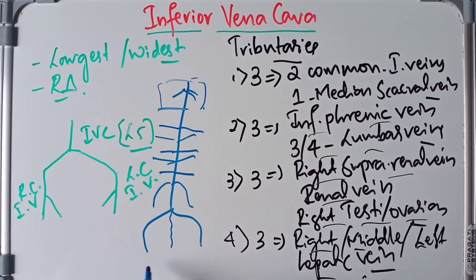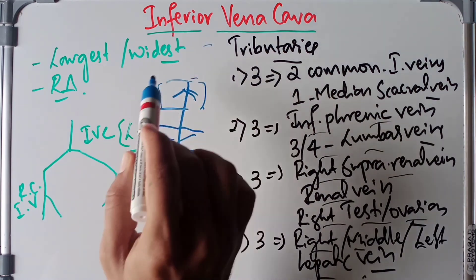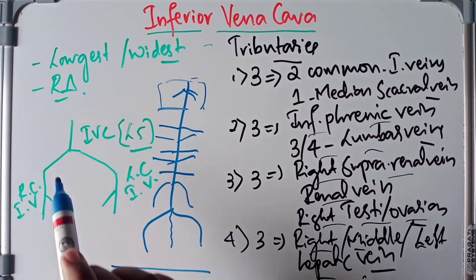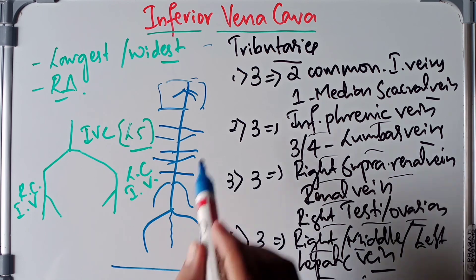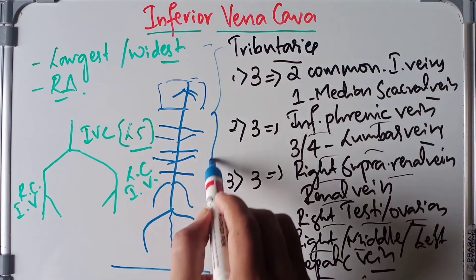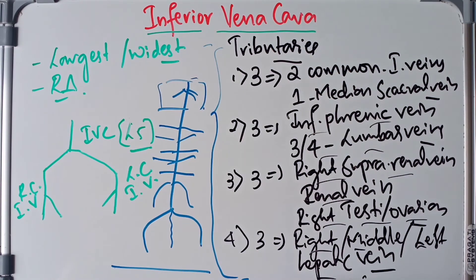That concludes the anatomy of the inferior vena cava covering its formation, course, termination, relations, and complete tributaries. Thank you for watching — if you liked the video, please subscribe and share it with your friends.